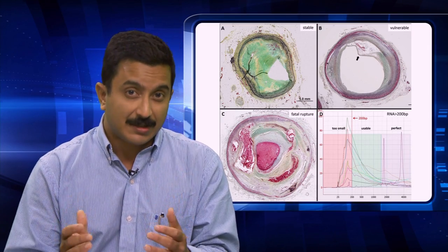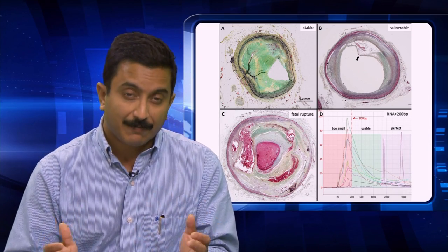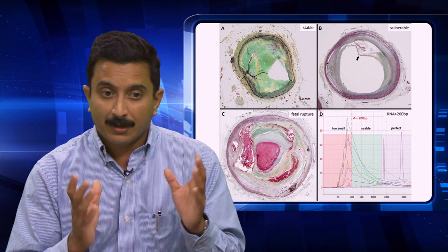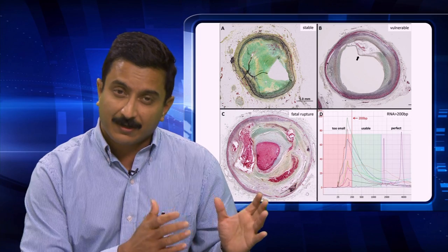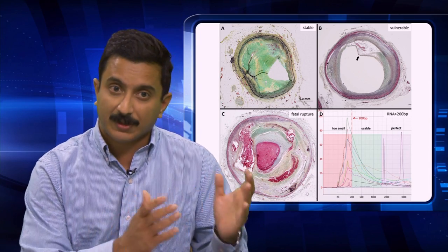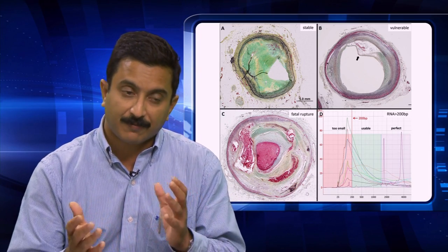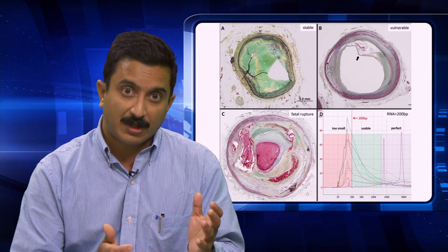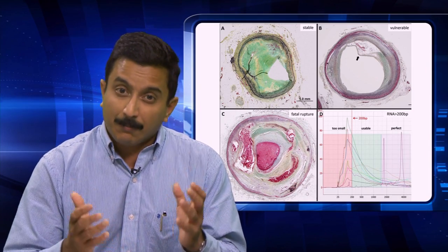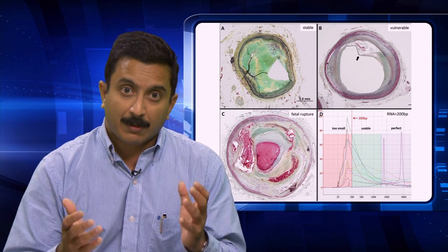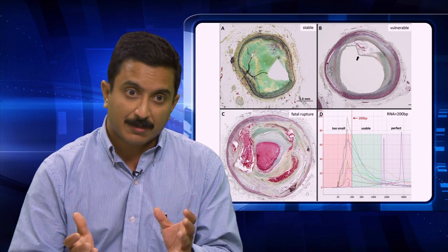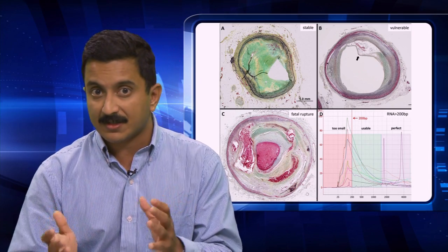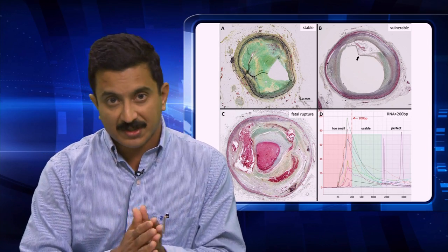Our next challenge is to sequence the RNA from these plaques, and that is unfortunately a little harder than it sounds, because the hearts were originally collected not for sequencing, but for pathology procedures. The chemicals used for histology staining usually degrade the nucleic acids pretty badly. However, we've been able to recover substantial amounts of RNA in a size range that, although it's not perfect, is still usable for sequencing.